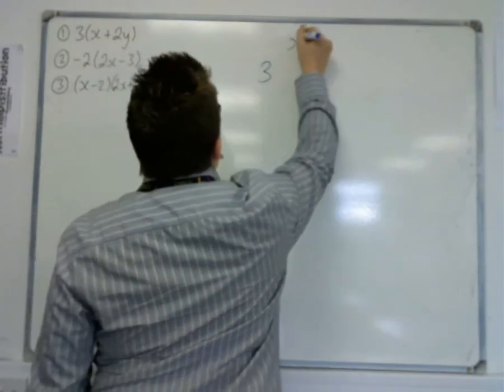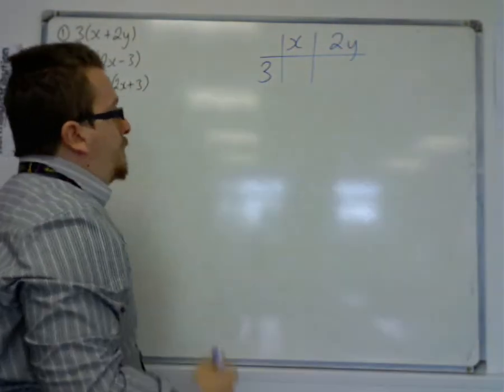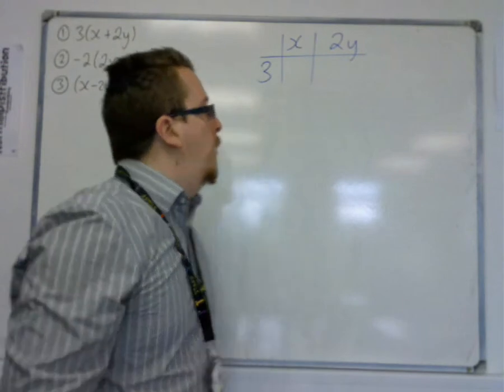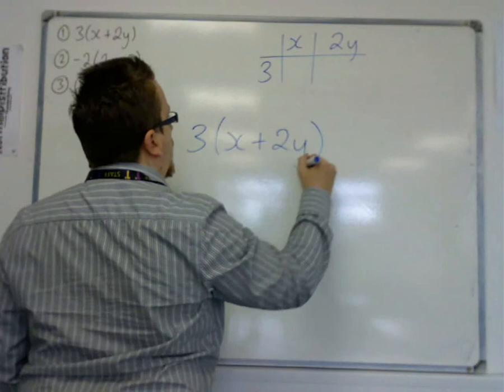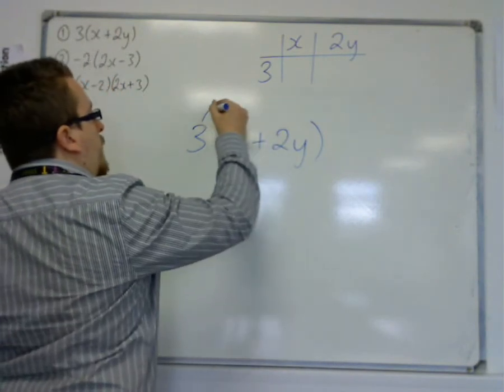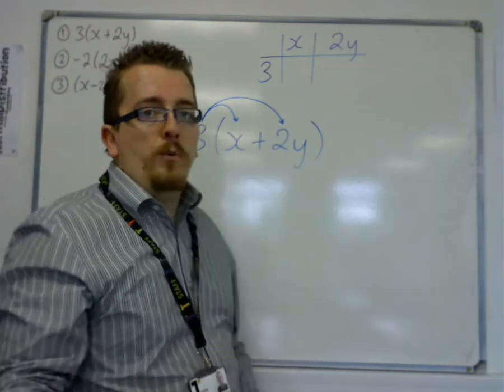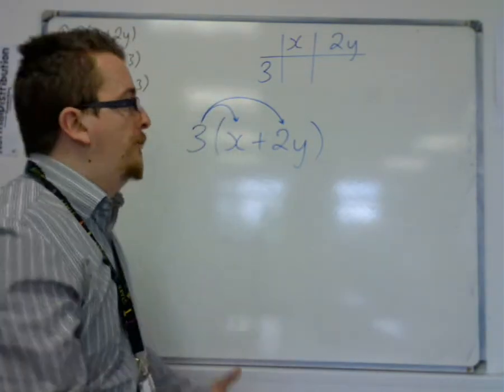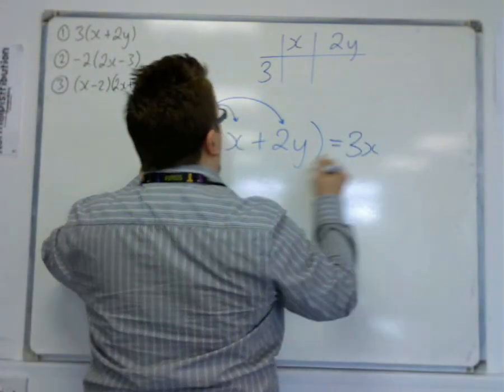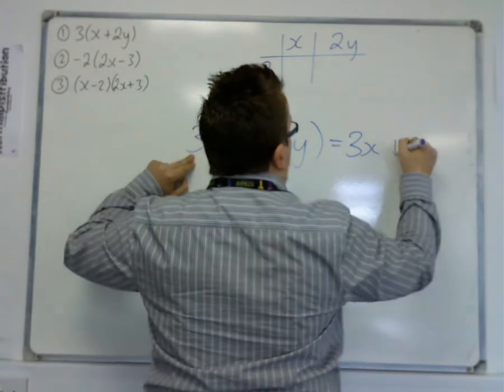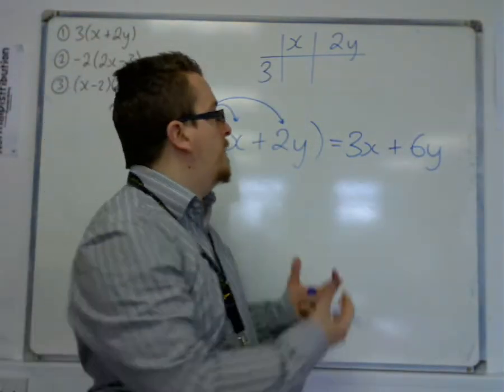So I'm just going to try and go through different ways that you might be used to doing this. You may well have been taught to set it out in a grid, that's a possibility. I originally never was, really the way I was taught to do this was to look at three times x and just draw on some arrows initially. Obviously the arrows will disappear once you get confident with it. So we have three lots of x is three x and three lots of two y makes six y. So I'm immediately simplifying it. So we have three x plus six y.